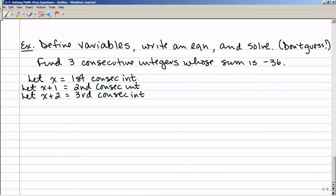Now I need to write an equation. Notice it says that these 3 consecutive integers add up to negative 36. So my equation is x plus, because that's my first one, plus my second integer, which is x plus 1, plus my third integer, which is x plus 2, and those add up to negative 36. So this is my first integer, plus my second, plus my third.